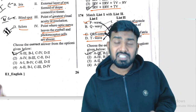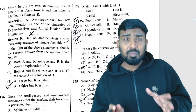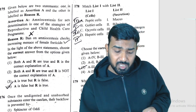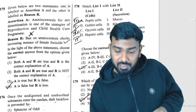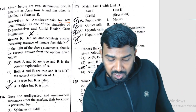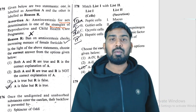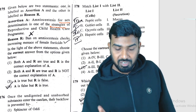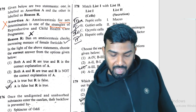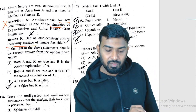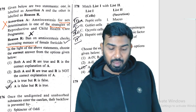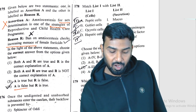Question 175: assertion — amniocentesis for sex determination is a strategy — wrong, because amniocentesis has been banned. Reason — ban on amniocentesis checks the increasing menace of female feticide — this is true. So assertion is false, reason is true.